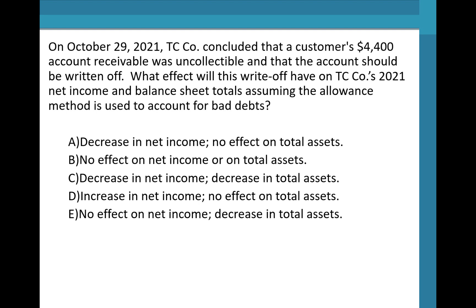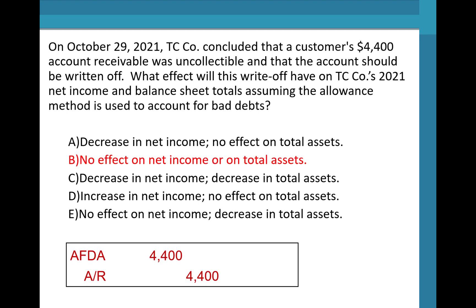Welcome back. The answer is B — no effect on net income or total assets. To write off the account, we debit the allowance for doubtful accounts and credit AR, so those two cancel each other out with no impact on total assets. And since neither are income statement accounts, there is no effect on net income either.